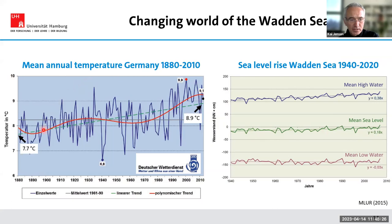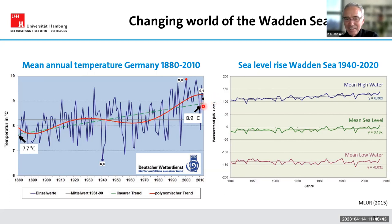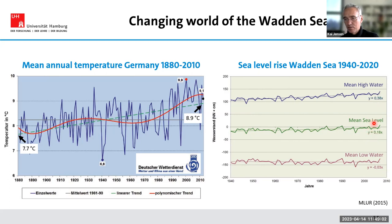What consequences do these changes in atmospheric CO₂ have for the Wadden Sea? Mean annual temperature in Germany increased from approximately 7.7°C to 8.9°C — a rise of about 1.5 Kelvin — between 1818 and 2010. As a consequence of rising temperature, the mean high water level increased by approximately 40 centimeters and the mean sea level by 20 centimeters during the period 1940 to 2010.